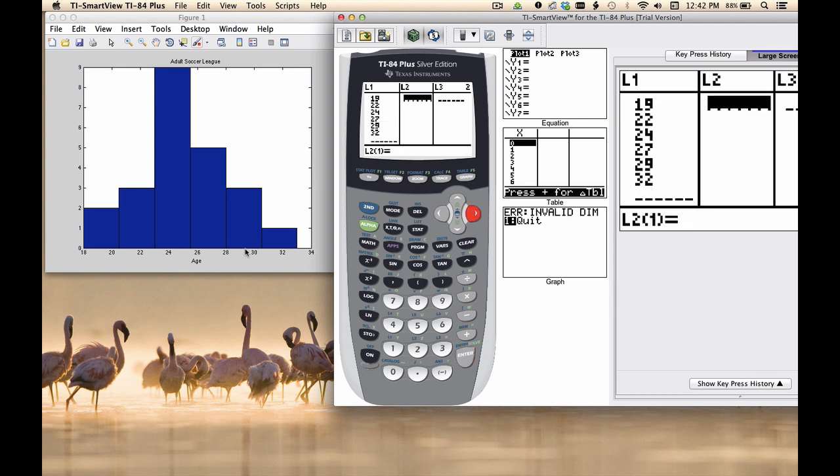Now over in L2, I want to enter the frequency. Like all histograms, the vertical axis is telling me how many people fall into this bin. So I'm going to enter the counts or frequency for each value. In the first bin there are two players, then three. Here we've got nine, five, three, and one.